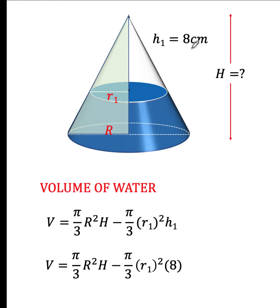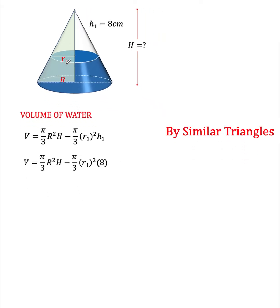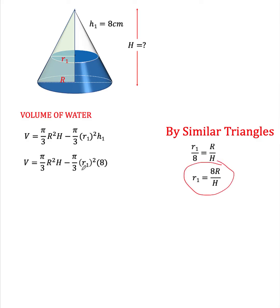The value of h₁ is given as 8 centimeters and we copy all the rest. As the formula is written, there's nothing more we can do unless we know the value of big R or r sub 1. So, using similar triangles, we can form this proportion: the ratio of the base of the smaller triangle over its height h₁ (which is 8 centimeters) equals the ratio of the longer base R over the height of the bigger triangle H. Solving for r sub 1, we get r sub 1 equals 8r over H, and we substitute this into the volume formula.